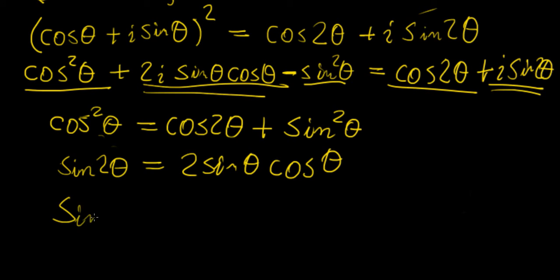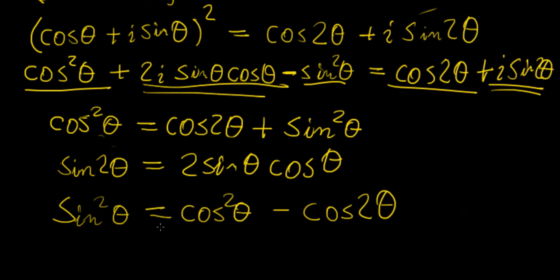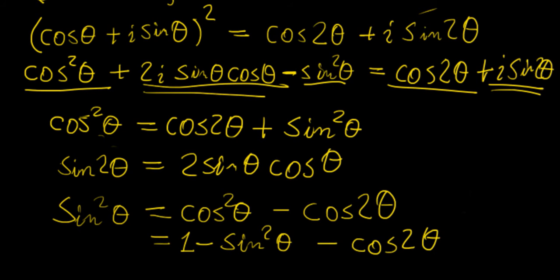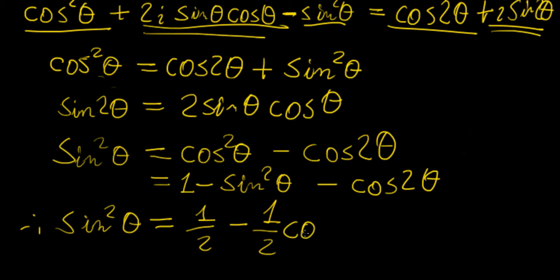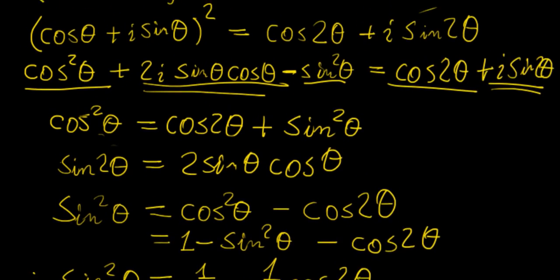Since the imaginary part gives the double angle formula rather than sine squared theta directly, we need another approach. We rearrange the real-part equation: cosine squared theta minus cosine 2theta equals cosine squared theta minus (one minus sine squared theta). Applying the Pythagorean identity and rearranging, then dividing both sides by two, gives us sine squared theta equals one half minus one half cosine 2theta — exactly the same form as the cosine squared identity but with the sign of the cosine term inverted.